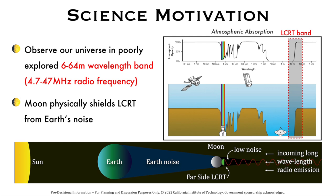the Moon acts as a physical shield that isolates LCRT from radio interference from Earth-based sources, ionosphere, Earth-orbiting satellites, and Sun's radio emissions during the lunar night.